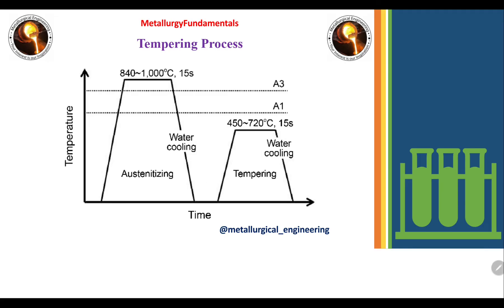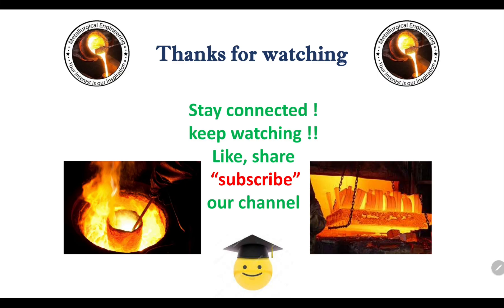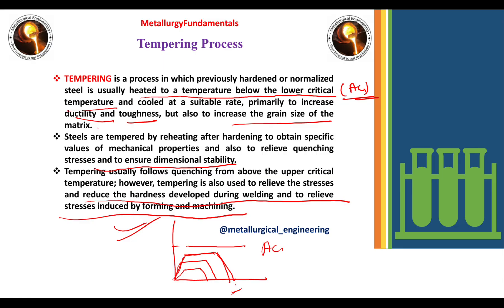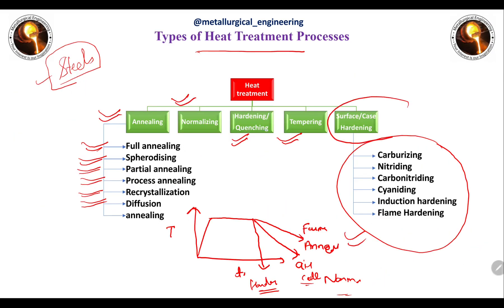Here you can see the combination of hardening and tempering. For a hypoeutectoid steel, the hardening process involves heating above the A3 temperature, followed by a water quench. After that, the same material is heated just below the A1 temperature for some time, followed by air cooling — this is the tempering step. Thank you for watching this video. Upcoming videos will cover surface hardening treatments such as case hardening, including carburizing, nitriding, carbonitriding, cyaniding, induction hardening, and flame hardening.